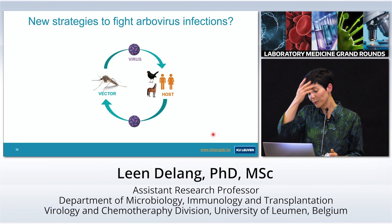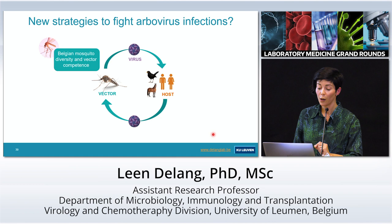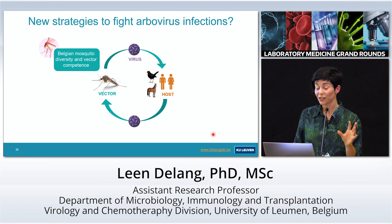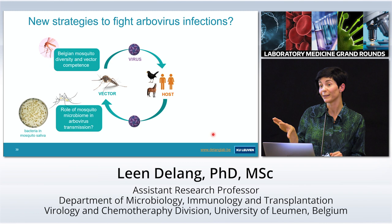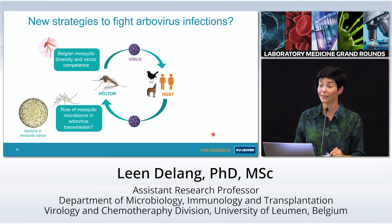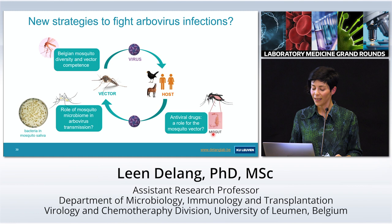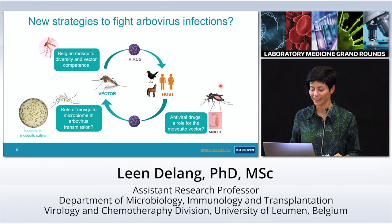In my lab, we try to focus on all elements of the virus transmission cycle and develop new strategies. One student is looking at Belgian mosquito diversity and testing Belgian mosquitoes for their vector competence for West Nile virus and Usutu virus. We also have people working on the role of the mosquito microbiome in arbovirus transmission, since bacteria in mosquitoes can affect virus transmission. There are also insect-specific viruses being discovered in mosquitoes that can affect whether an arbovirus is transmitted or not.